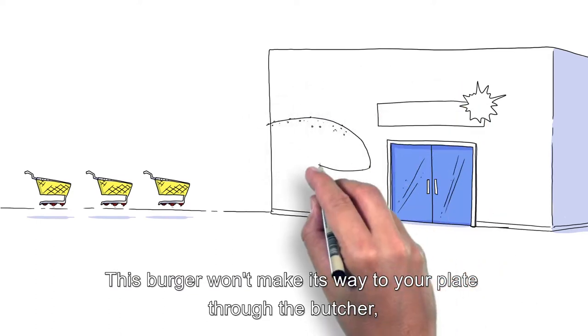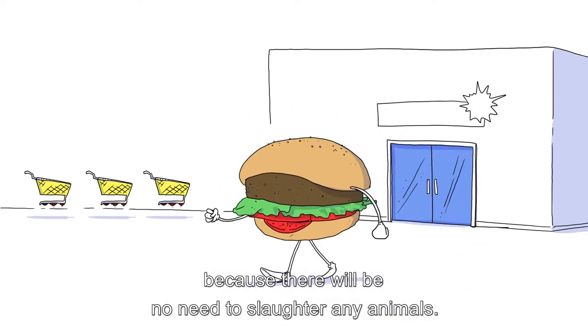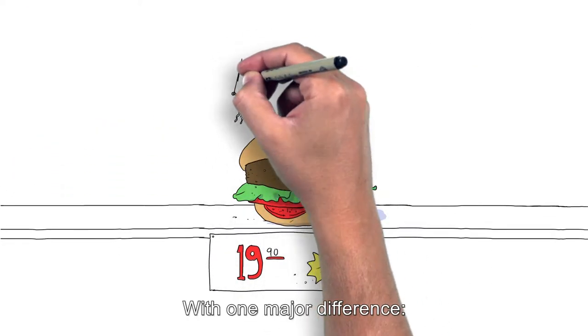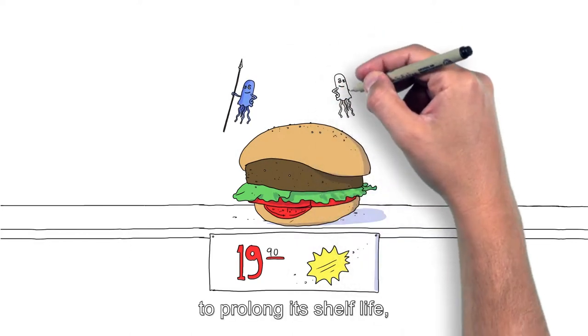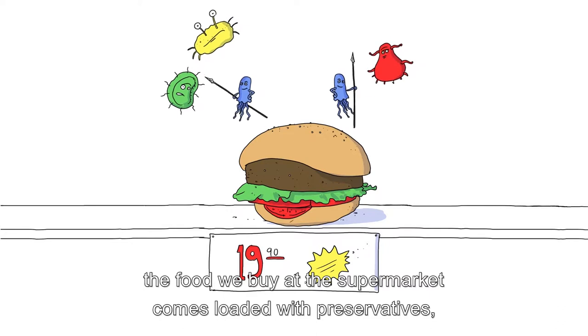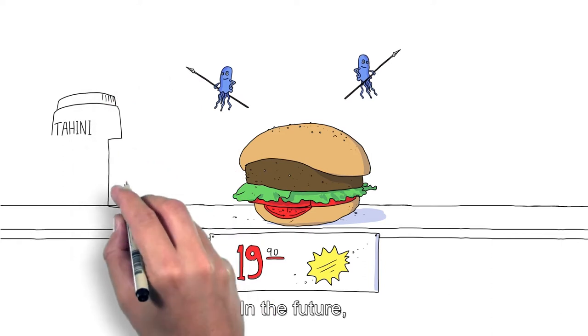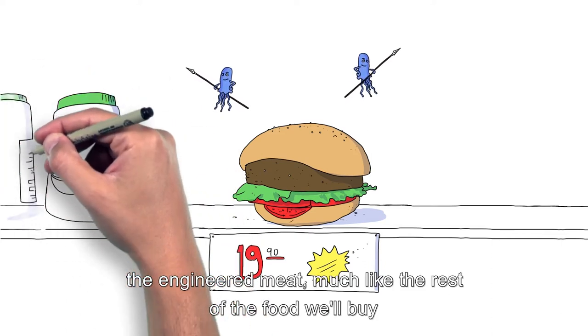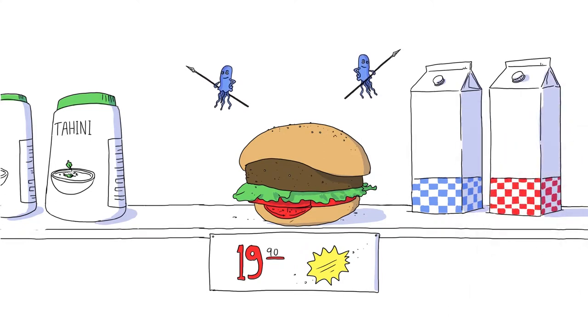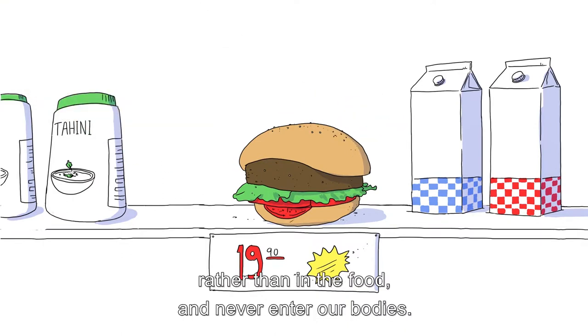This burger won't make its way to your plate through the butcher, because there will be no need to slaughter any animals. Instead, you'll be able to find it in the supermarket, just like it is now, with one major difference. To prolong its shelf life, the food we buy at the supermarket comes loaded with preservatives, taste enhancers, and other artificial ingredients. In the future, the engineered meat, much like the rest of the food we'll buy, will no longer contain all of that. Instead, these substances will exist in the packaging, rather than in the food, and never enter our bodies.